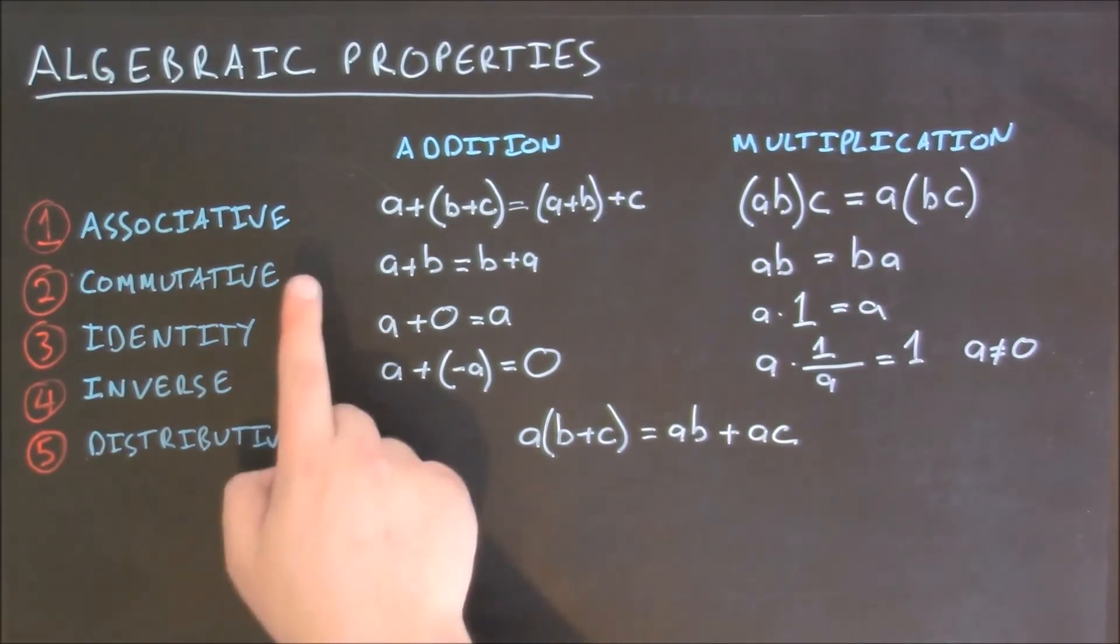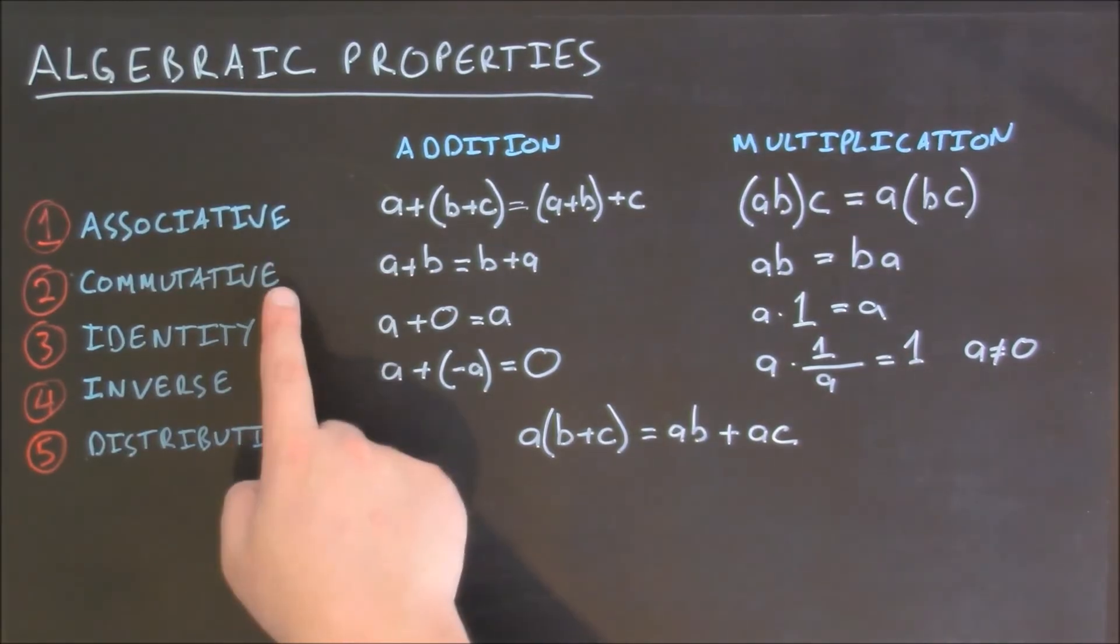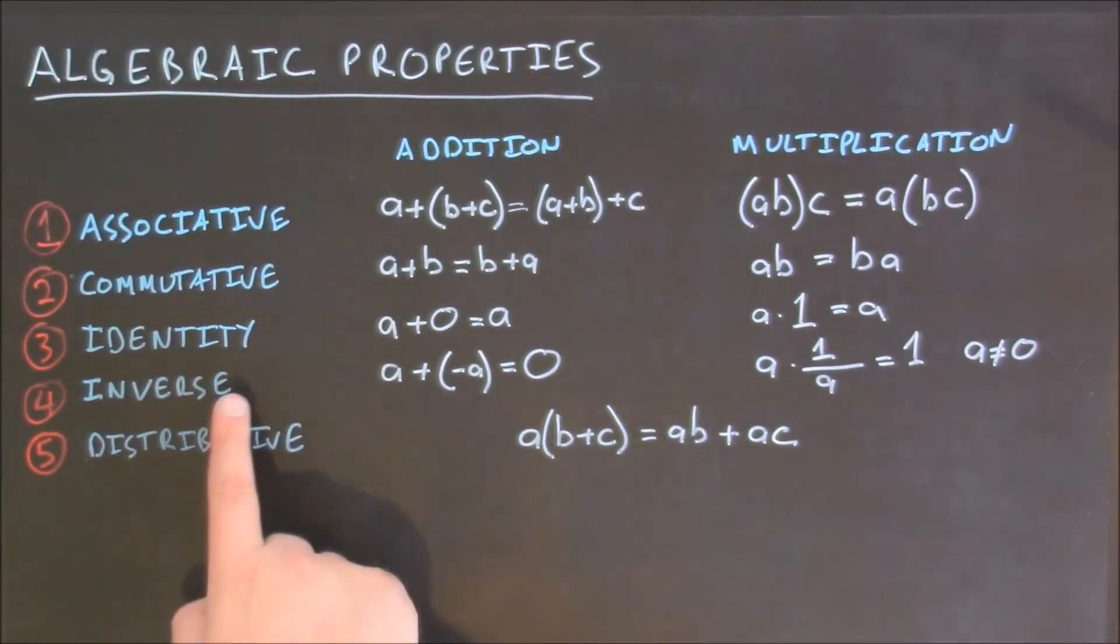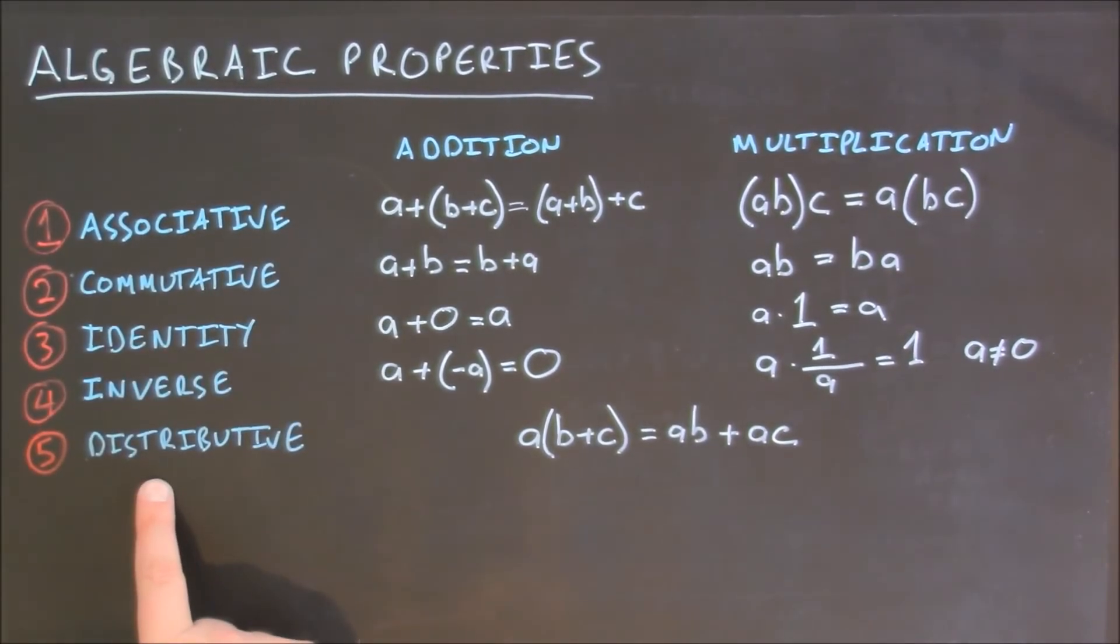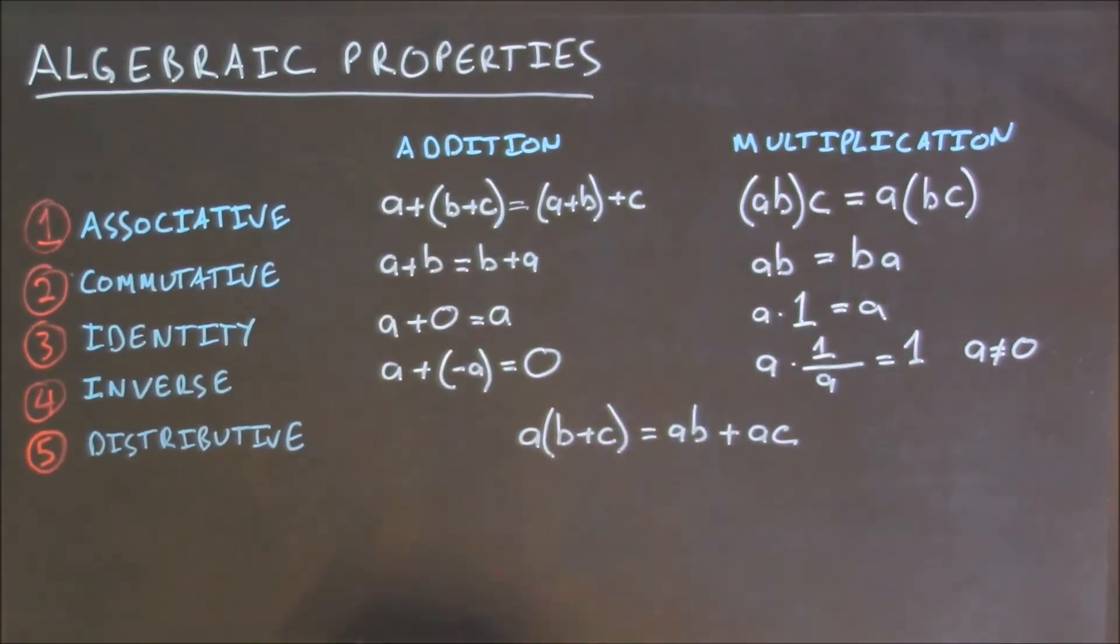These five properties—the associative, commutative, identity, inverse, and distributive properties—are the five fundamental properties of algebra, and they have components for both addition and multiplication.